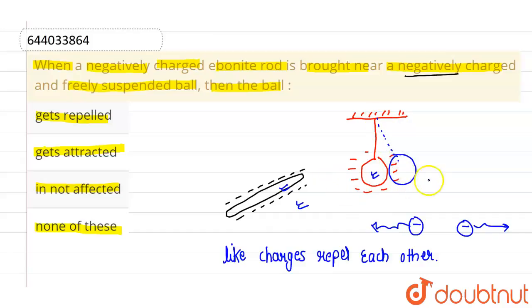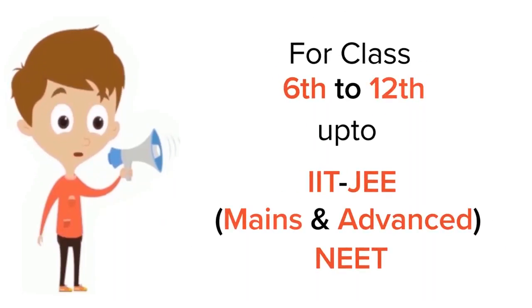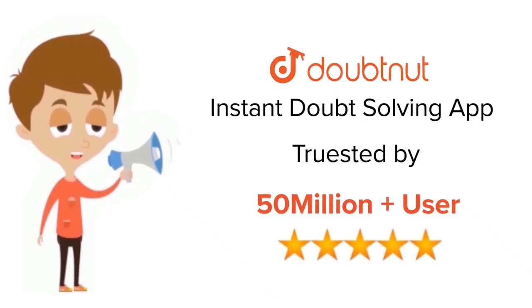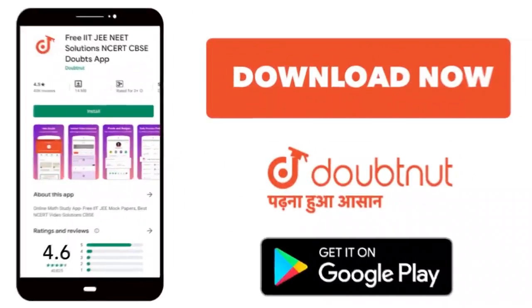And rest all options are incorrect. I hope you understood. Thank you. For class 6 to 12, IIT and NEET level, trusted by more than 5 crore students, download Doubtnet app.